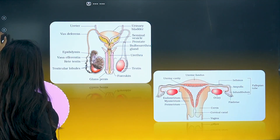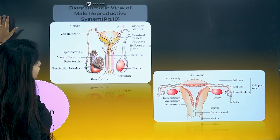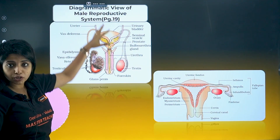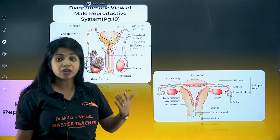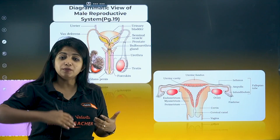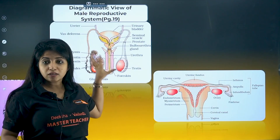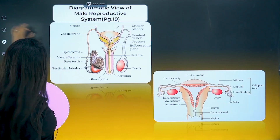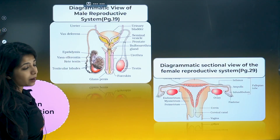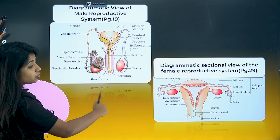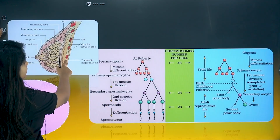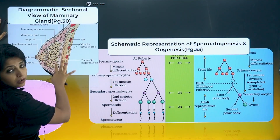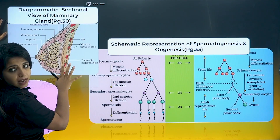Moving to Human Reproduction — the diagrammatic view of the male reproductive system is important. The sectional view is different, but this picture is usually asked. Also practice the female reproductive system diagram. Similarly, the mammary gland diagram is very, very, very important — practice it.